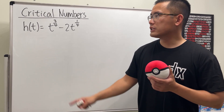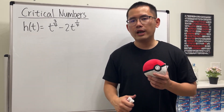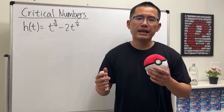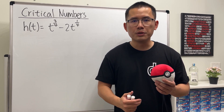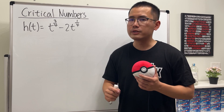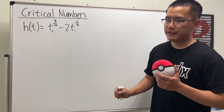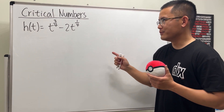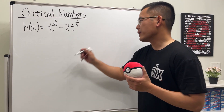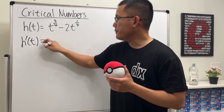Here we are going to find the critical numbers for this function. We are going to first do the derivative and then set equal to zero, but for this one we also have to worry about where the derivative is undefined. So be really careful with this.